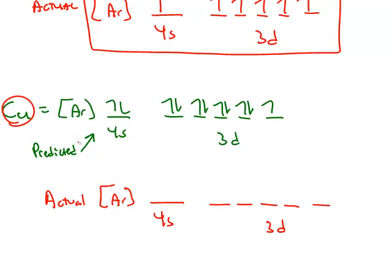Copper is very similar. You predict that the 4S is full and the 3D is almost full. We can think about taking this electron and putting it into the 3D subshell, ending up with an unpaired electron in the 4S.